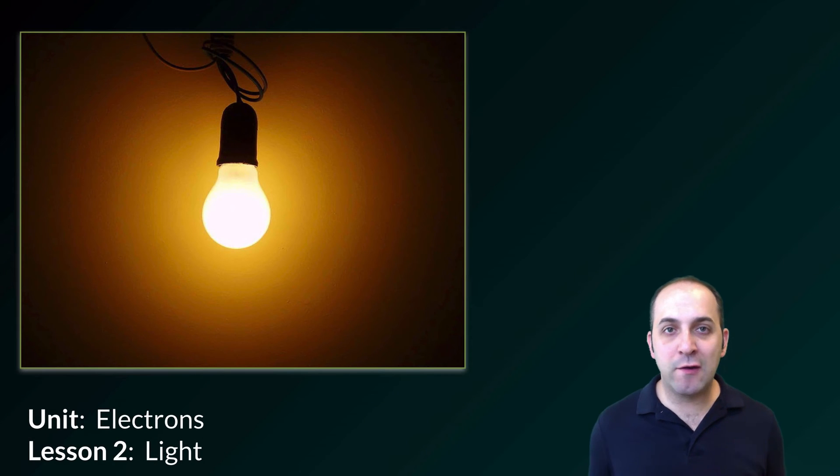Hello and welcome to lesson two here in our Electrons Unit. Here we're going to talk about light, which is a pretty important thing it turns out. So this is a picture of a light bulb and how that light bulb produces light actually has to do with the behavior of the electrons and the atoms that comprise that light bulb. So let's go in and take a look at how this works.